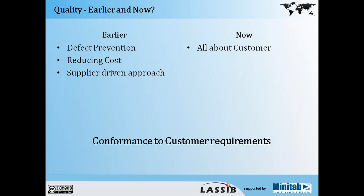Earlier, when quality started being realized as important in both manufacturing and service sectors, people used to view quality as defects. If a product has zero defects, then it's good quality. Or if a process has been reducing cost, it's a good quality process. If we can meet the requirements of a supplier — for example, I know how to make good coffee, so if I open a coffee shop, I'm assuming I'm providing good quality coffee. It was a very one-sided approach where we always analyzed things from the point of view of how we know how to do it.